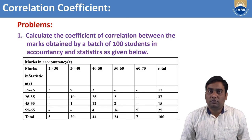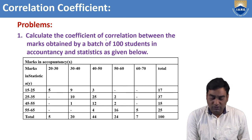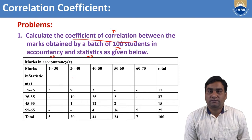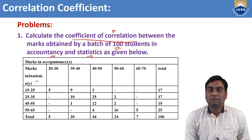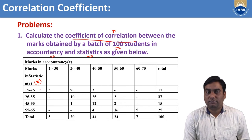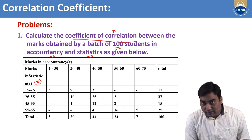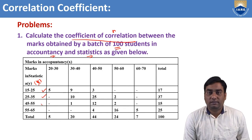Suppose we take one problem on bivariate data: calculate the coefficient of correlation r between the marks obtained by a batch of 100 students in two different subjects — accountancy and statistics. Marks in accountancy (x) are given in ranges: 20–30, 30–40, 40–50, 50–60, 60–70. Marks in statistics (y) are given in ranges: 15–25, 25–35, 35–45, 45–55, 55–65.